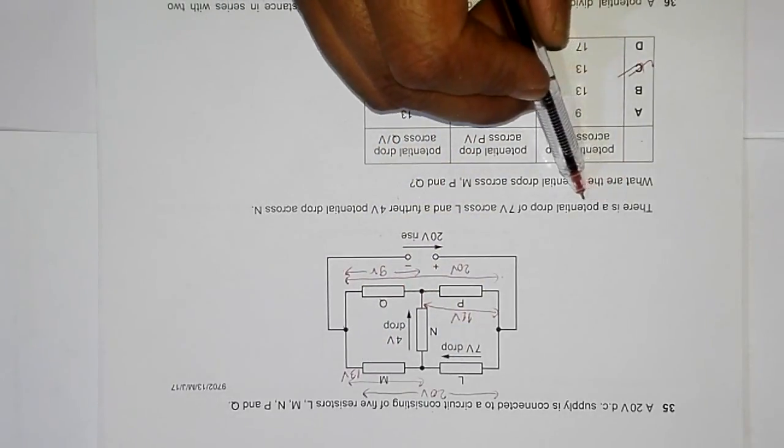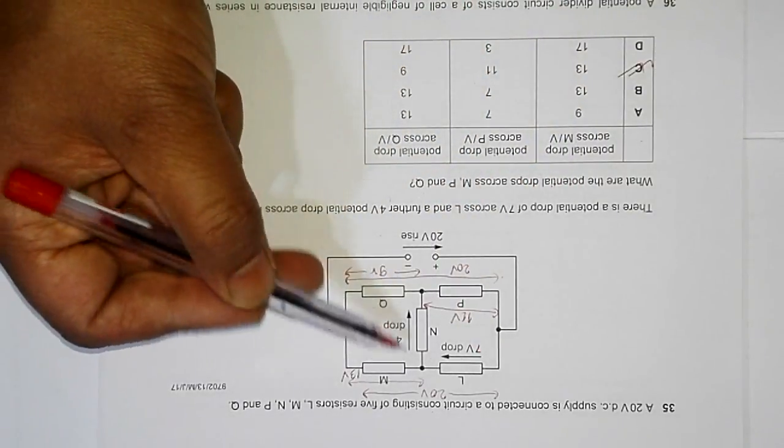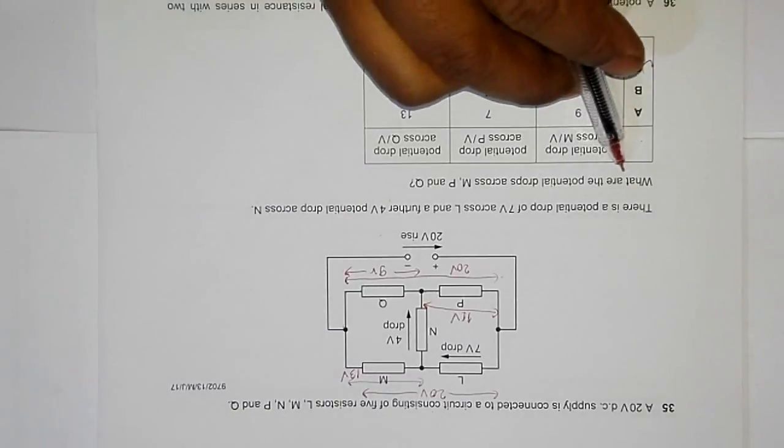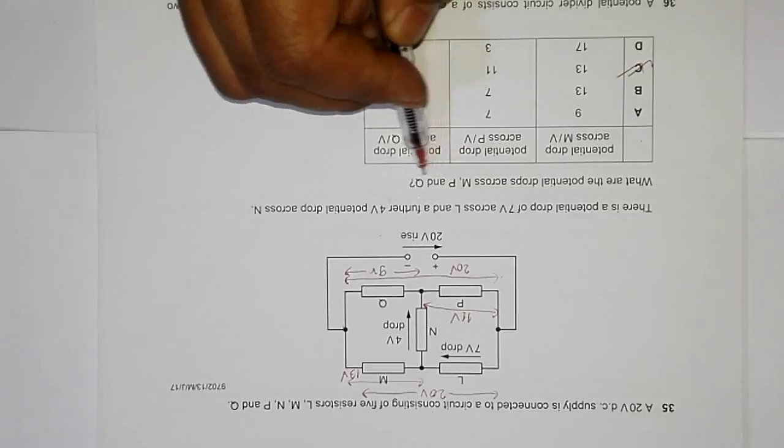There is a potential drop of 7 volt across L and a further 4 volt across N. Now we have to find the potential drops across M, P and Q.